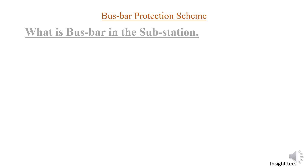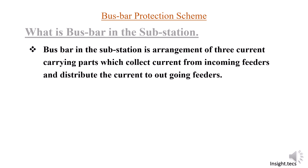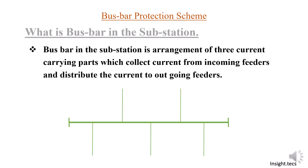What is a bus bar in a substation? Basically, a bus bar is an arrangement of three current-carrying conductor paths which collect current from incoming feeders and distribute the current to the outgoing feeders. As you can see, it is just a conductor which is a current-carrying path, and it connects various numbers of feeders.